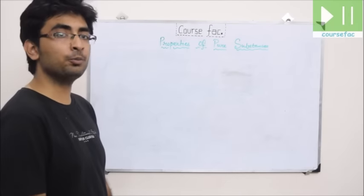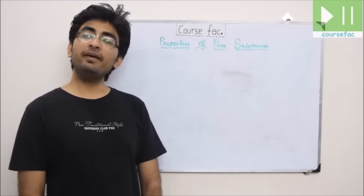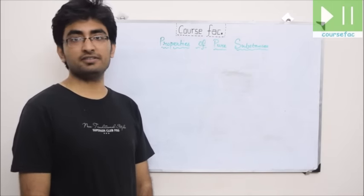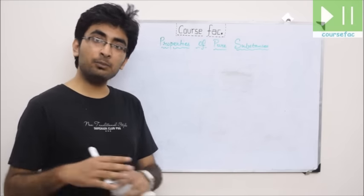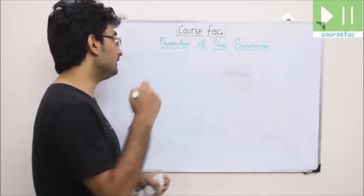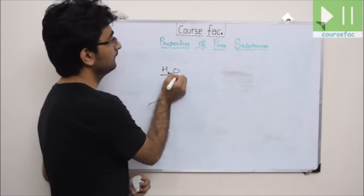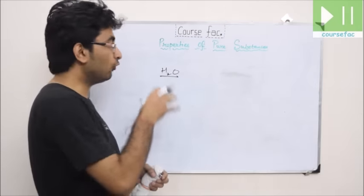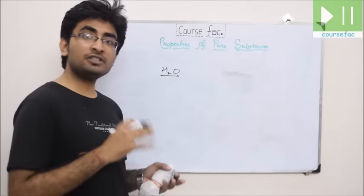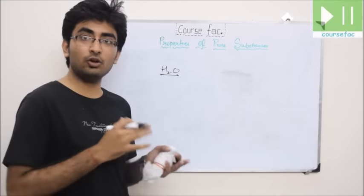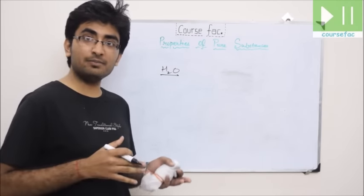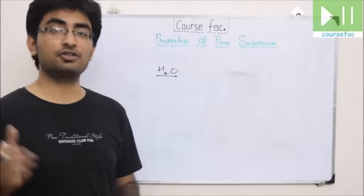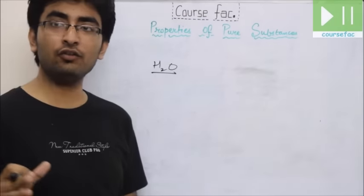Hello guys, today we are learning about the properties of pure substance. A pure substance has a single component system, meaning its chemical composition remains constant throughout its mass. For example, water. In this lecture, we will be learning the PV, TS, and PT diagrams of water in three different phases. Pure substance can exist in all phases: solid, liquid, gas, plasma, and even Bose-Einstein condensate.